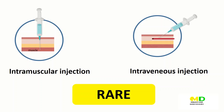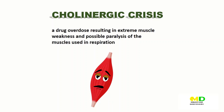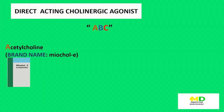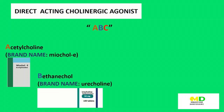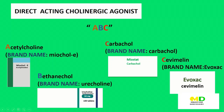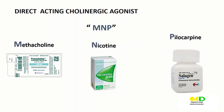Cholinergic agonists are rarely administered by intramuscular or intravenous injection because they are almost immediately broken down by cholinesterase in the interstitial spaces between tissues and inside the blood vessels. Moreover, they begin to work rapidly and can cause a cholinergic crisis — a drug overdose resulting in extreme muscle weakness and possible paralysis of the muscles used in respiration. The direct-acting cholinergic agonists imitate acetylcholine by directly binding and activating the receptors. The drugs are: Acetylcholine, Bethanechol, Carbachol, Cevimeline, Methacholine, Nicotine, and Pilocarpine. Use the letters ABC-MNP to remember these drugs.